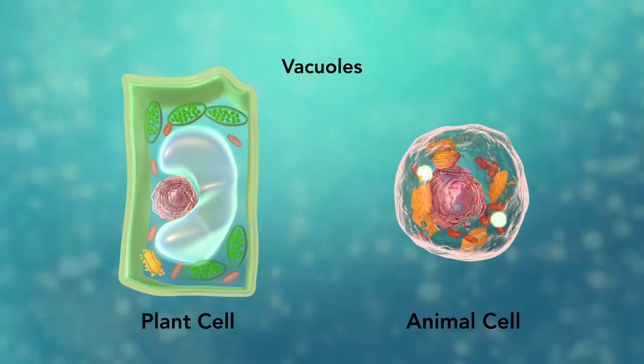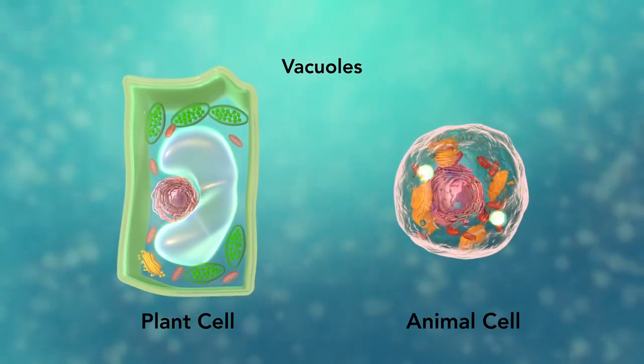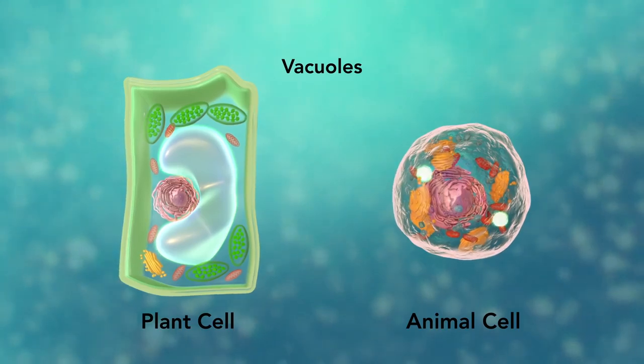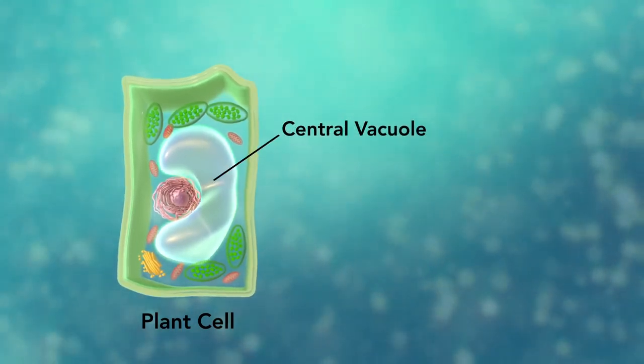Vacuoles are sac-like structures that store different materials. Here in this plant cell, the central vacuole stores water.